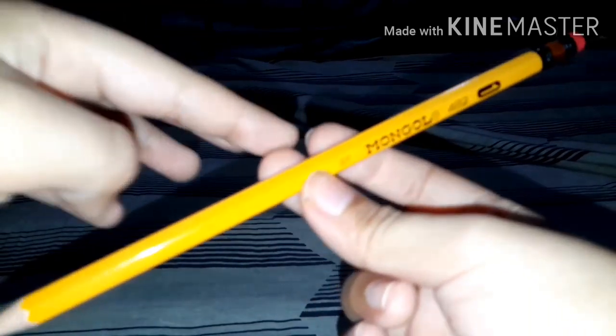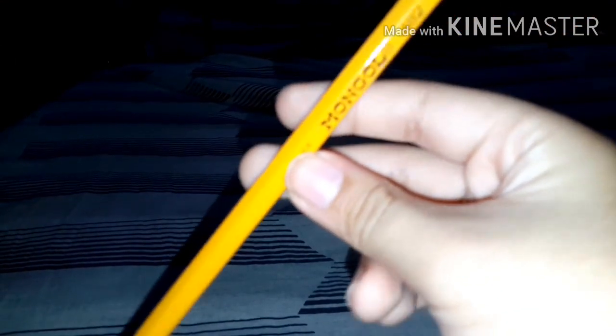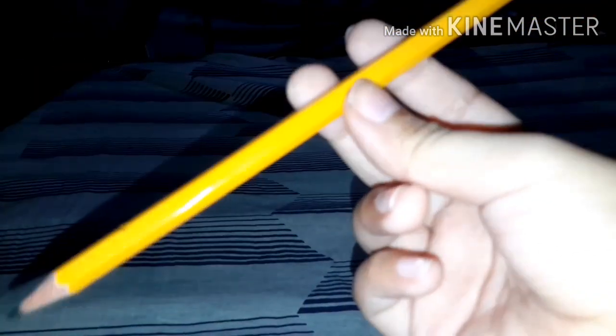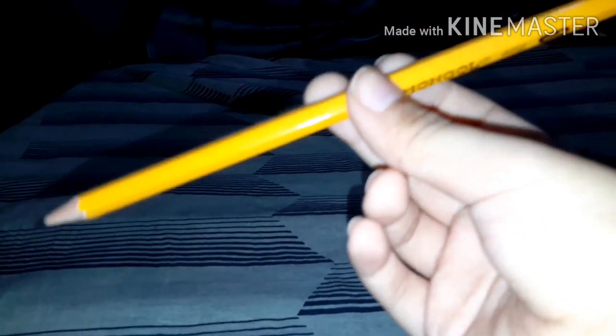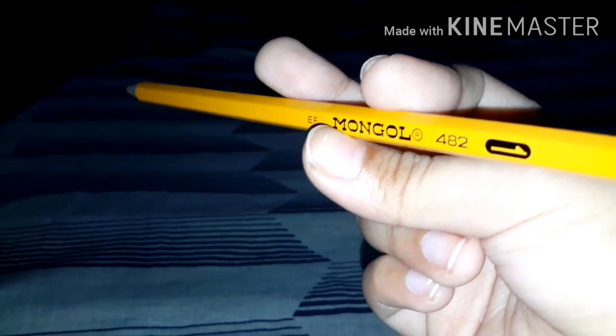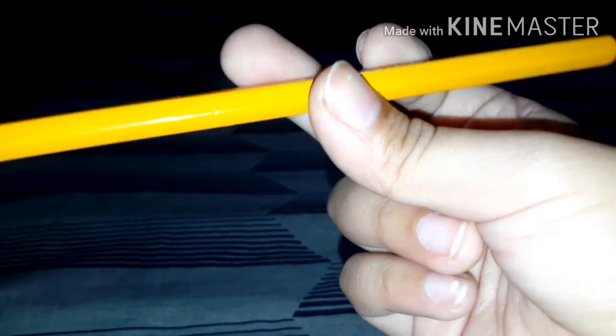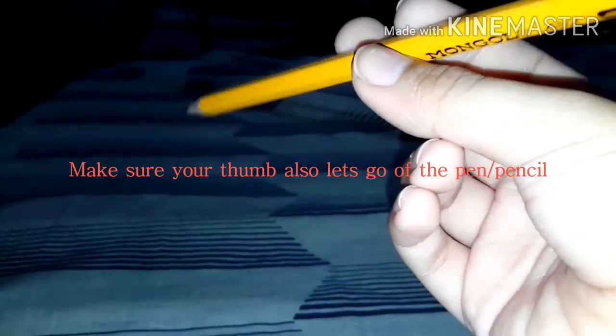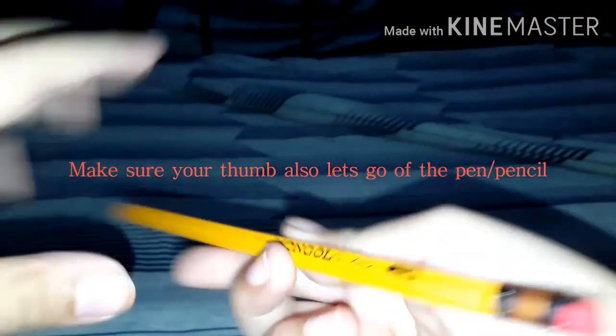Now when you spin it, you're gonna make your middle finger push, and then your index is gonna help like that. When you're ready to spin it, your middle is gonna push it very fast, and then your index should let go of the pencil so it free spins like that. Let's try again.